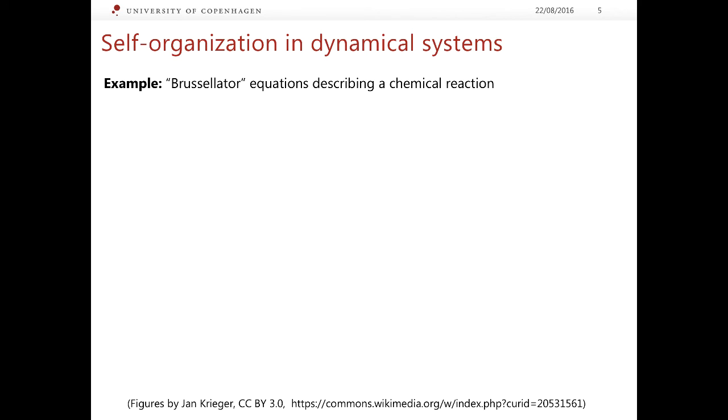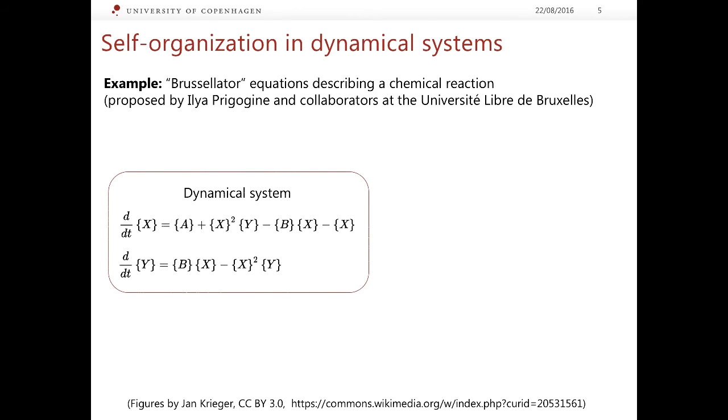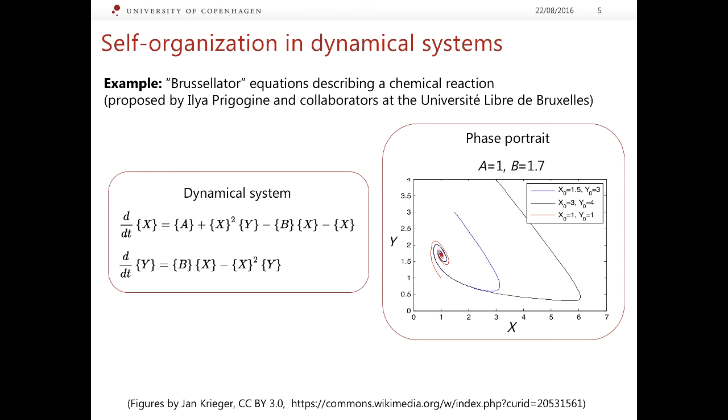Let us consider an example. We will consider equations describing a certain chemical reaction. And the name of these equations is Brusselator after the city Brussels. And the reason for that is that the model is proposed by Ilya Prigozhin and his collaborators, who worked in the University of Brussels. The dynamical system for this chemical reaction takes this form of two ordinary non-linear differential equations of the first order. And to predict the behavior of this system, it is quite helpful to look at the phase portrait. There are two control parameters in the system, parameter A and parameter B. And now let us set certain values of these parameters. We set A to 1 and B to 1.7.